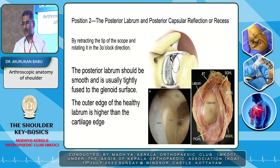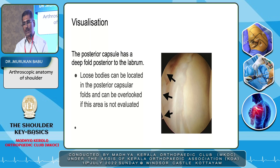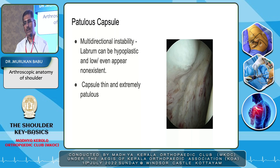Coming to the second position — you come back from the first position to see the posterior capsule and the posterior labrum. The posterior labrum should be smooth and is usually tightly fused to the glenoid surface. The outer edge of the healthy labrum is slightly higher than the cartilage edge. The posterior capsule has a deep fold posterior to the labrum, and in this area you may be able to see loose bodies — but most of the time you may miss these if you are not carefully looking at the posterior aspect. Sometimes you can see a lax capsule, especially in multi-directional instability, where the labrum can be hyperplastic or even appear non-existent.